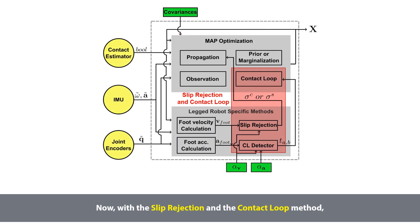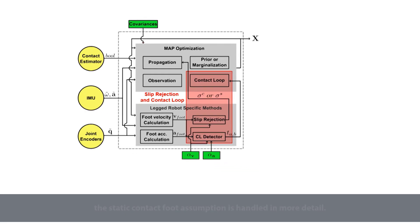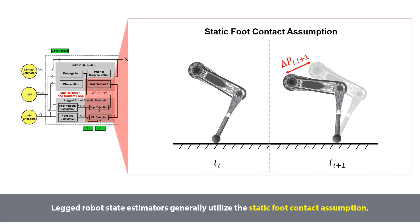Now, with the slip rejection and the contact loop method, the static contact foot assumption is handled in more detail. Legged robot state estimators generally utilize the static foot contact assumption, which assumes that the foot in contact does not move.